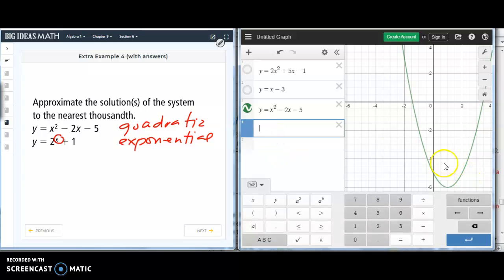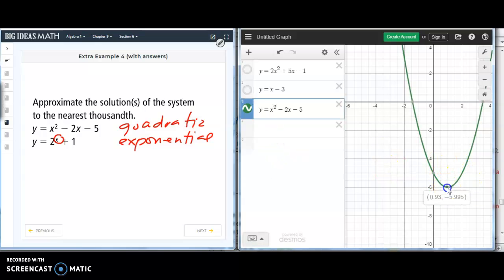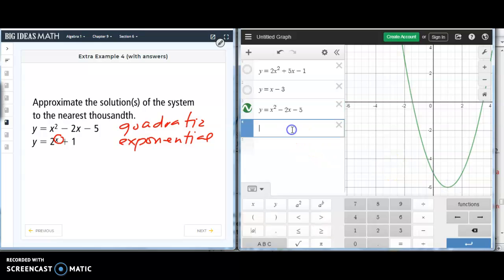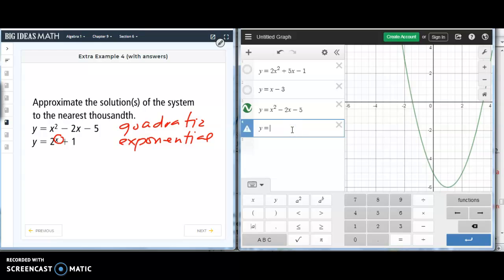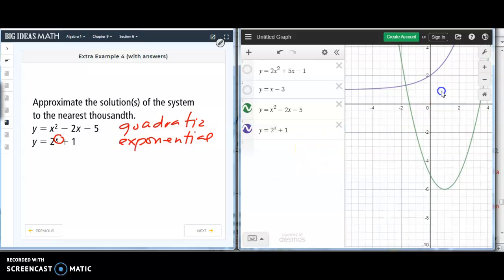With vertex, where the vertex is 1, negative 6. It has a minimum point because it's concave up. Now, let's plot the graph of 2 raised to x. So 2 raised to x plus 1. So, this is another curve.